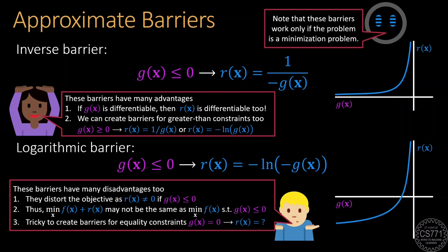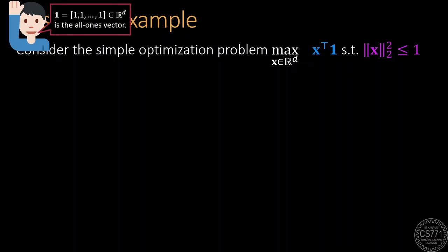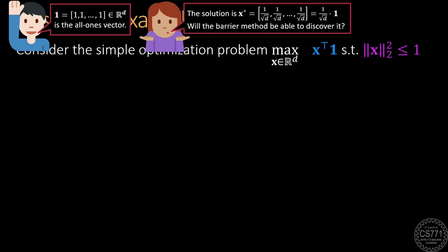Let us take a simple example to understand this better. Here is a simple example to understand the use of barrier functions. We wish to find a d-dimensional vector x inside the unit ball such that the dot product of x and the all ones vector is the largest. The solution to this optimization problem is actually the vector with all coordinates equal to 1 by square root d, where d is the dimensionality of the vectors. Let us see if the barrier method can find this solution.